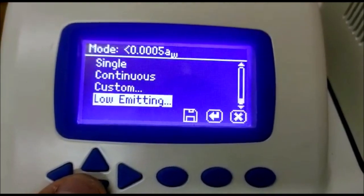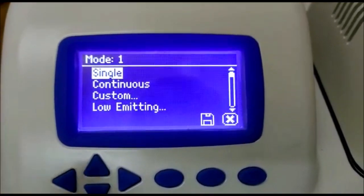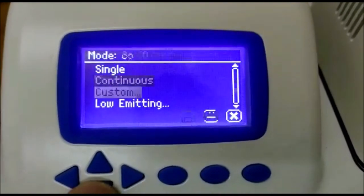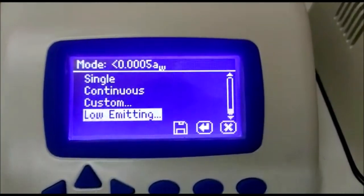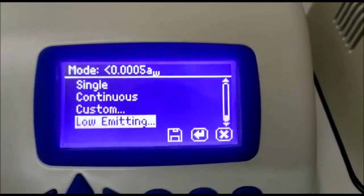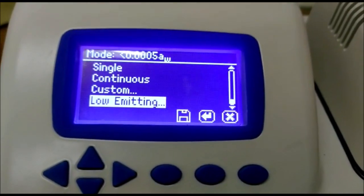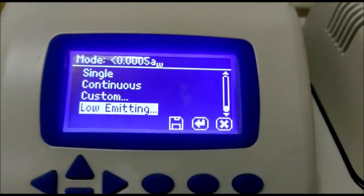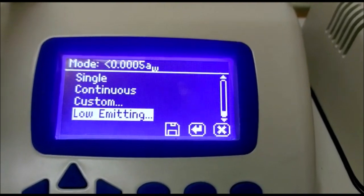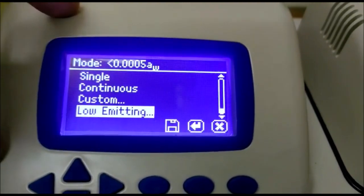We have low emitting mode. Low emitting mode basically is for sample which emits moisture, which emits water at a very slow rate. There is one more test to introduce in this Aqualab 4TE which is ISO 18787.